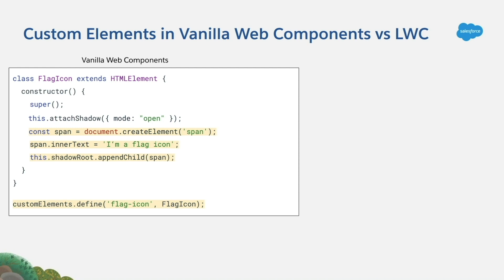And what we do is, after attaching this shadow tree, we start creating the markup for that custom element. Finally, we attach the markup dynamically to the custom element, to its shadow tree. And notice here that we have to define the custom element itself. What we do is to say that the custom element is going to be called flag icon, and we bind it to the flag icon class.